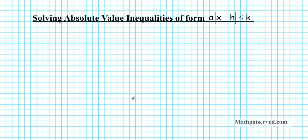Good day students. In this clip we're going to be going over two examples on how to solve absolute value inequalities of the form A times the absolute value of x minus h is less than or equal to k. Before we go over the examples, let's take a look at the possible solutions you can get, because if you have an idea of what your solutions can be, you can tell if your problem solving process was accurate or not.